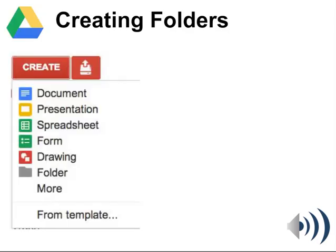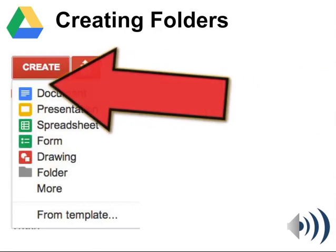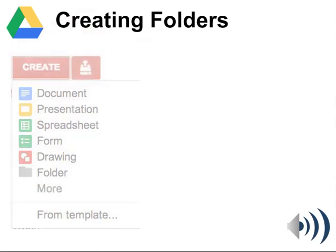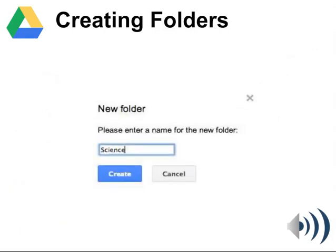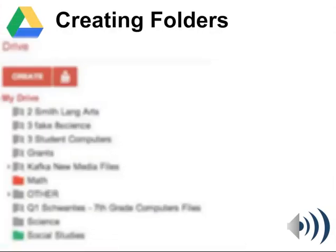A good idea in Google Drive is to make some folders to organize your files. You do this by clicking the Create button and choosing Folder. When you choose Folder you'll be asked to name that folder — so in this example I'll make a Science folder. I'll type 'science' and click Create, and this folder will now appear in My Drive.